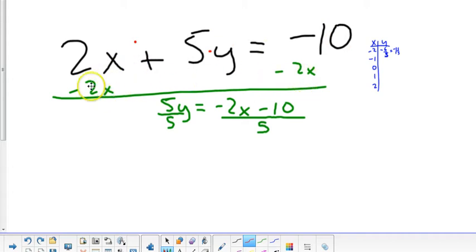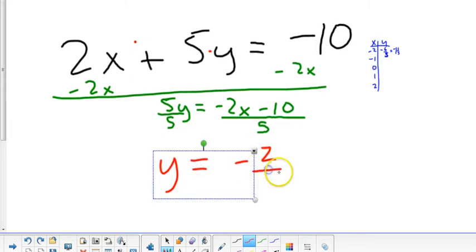So, one method is to solve for Y here. Subtract 2X from both sides. I get 5Y equals negative 2X minus 10. Divide both sides by 5, and that would give me Y equals negative 2 over 5X minus 2.